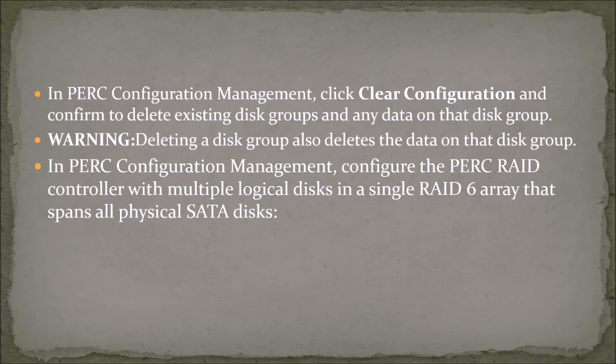In PERC configuration management, click Clear Configuration and confirm to delete existing disk groups and any data on those disk groups. Warning: deleting a disk group also deletes the data on that disk group. Then configure the PERC RAID controller with multiple logical disks in a single RAID 6 array that spans all physical SATA disks.